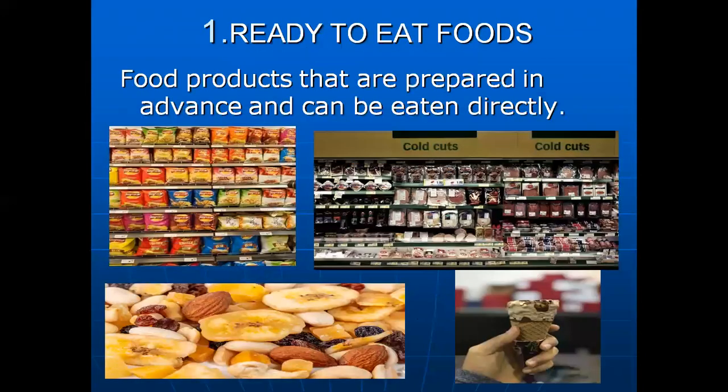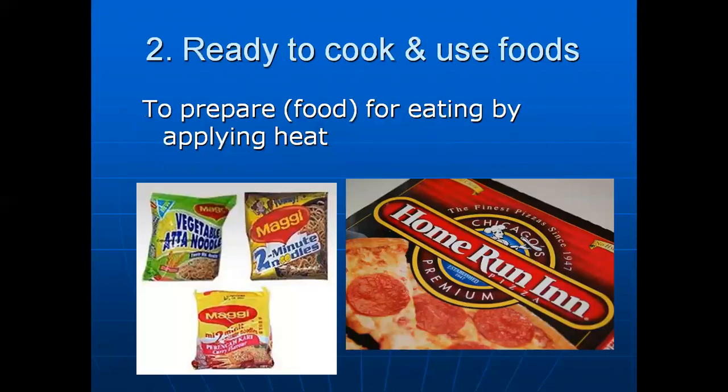Let's see examples of both. Ready to eat food — products that are prepared in advance and can be eaten directly. As you can see, there are chips in the picture, cold cuts which are already cured and ready to eat in sandwiches, dry fruits, and ice creams which we eat directly without any further processing. The second category is ready to cook or use food — the very popular Maggi noodles in India, and frozen pizzas which are very popular in European countries. You buy them in the market, bring them home, put them in the oven, and they are ready to cook and eat straight away, saving time.